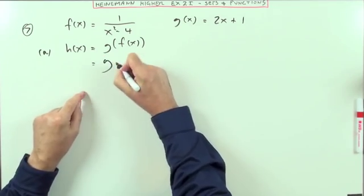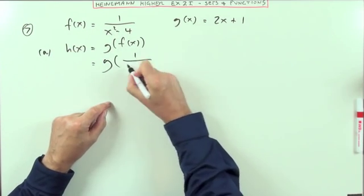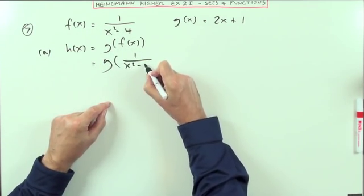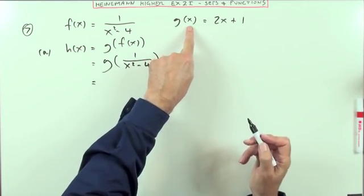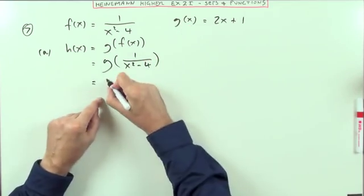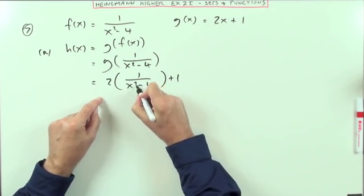So g is going to act on whatever f of x produces. Now f of x produces this fraction, 1 over x squared minus 4. What does g do to anything it gets hold of? Quite simply, it doubles it and then adds on 1.